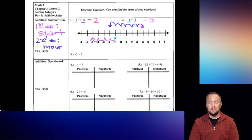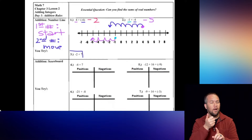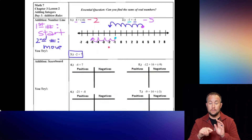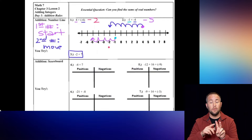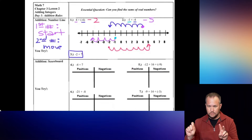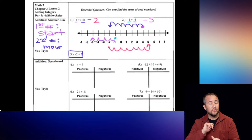Go ahead and pause the video and try the example negative 2 plus 7. Starting at negative 2, we go 7 spaces to the right because 7 is positive: 1, 2, 3, 4, 5, 6, and 7. Our final answer is positive 5.